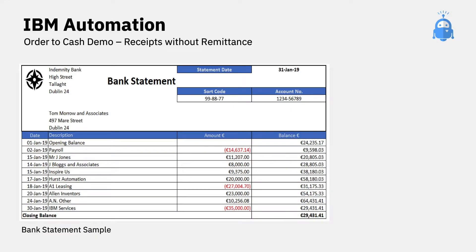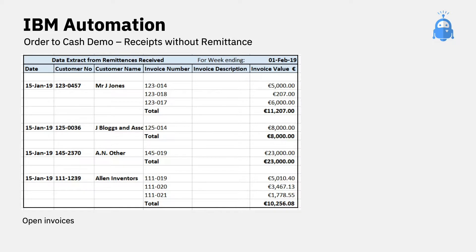One of the challenges that many organisations face is that sometimes they receive payments without remittance advices. These receipts need to be matched to the related invoices to allow them to be correctly processed and recorded.